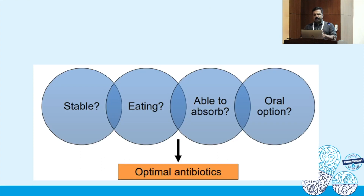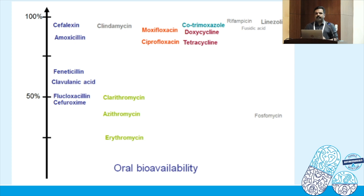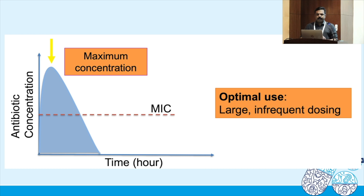When patients are stable and able to absorb orally, or if an oral option exists, it should be used. You should understand the oral bioavailability of antimicrobial agents. Drugs like amoxicillin, clindamycin, quinolones, doxycycline, and linezolid have excellent oral bioavailability, so they can be used to treat serious infections. There is evolving data that even oral agents can be used in treating infective endocarditis.